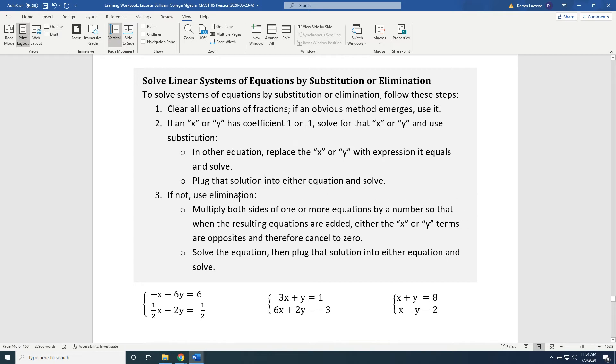All right, let's turn our attention now to elimination. How does elimination work? With elimination, we multiply both sides of one or more equations by a number so that when the resulting equations are added, either the x terms or the y terms are opposites and therefore cancel to 0.